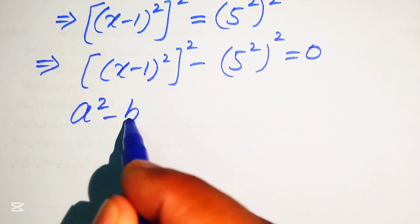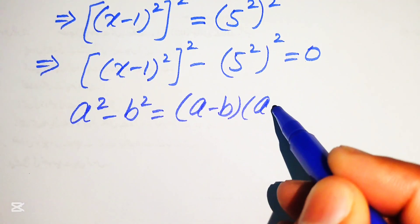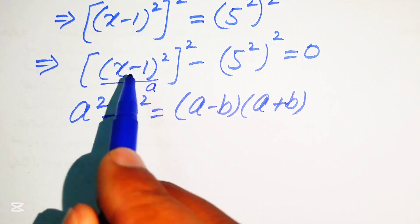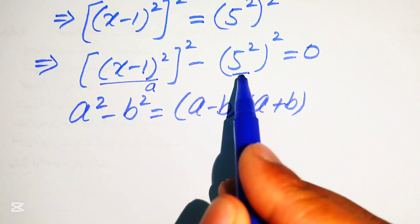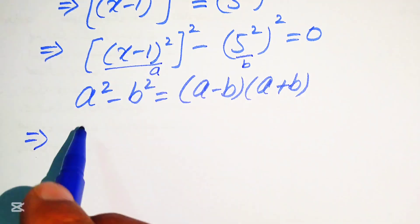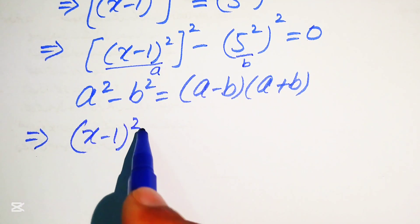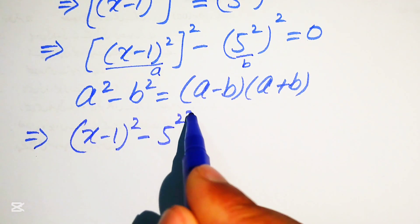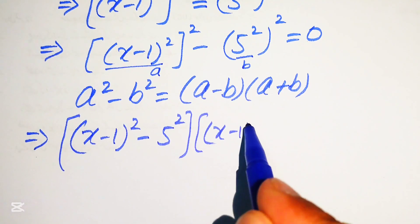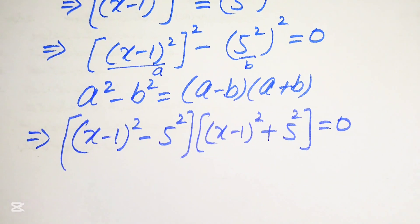Now we apply the algebraic formula: a² minus b² equals (a minus b)(a plus b). Here, a is (x-1)² and b is 5². So we write the expression as ((x-1)² minus 5²) times ((x-1)² plus 5²) equals 0.